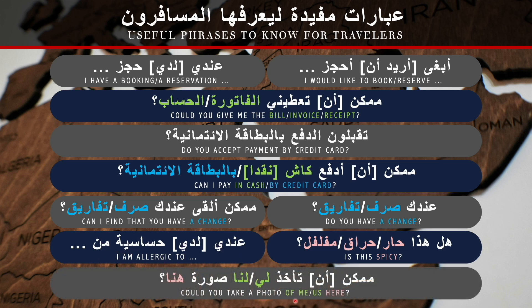'Could you take a photo of me / of us here?' In Modern Standard Arabic, addressing masculine: ممكن أن تأخذ لي صورة هنا / ممكن أن تأخذ لنا صورة هنا. In Saudi dialect: ممكن تأخذ لي صورة هنا / ممكن تأخذ لنا صورة هنا. If addressing a feminine person — Modern Standard Arabic: ممكن أن تأخذي لي صورة هنا. Saudi dialect: ممكن تأخذي لي صورة هنا / ممكن تأخذي لنا صورة هنا.